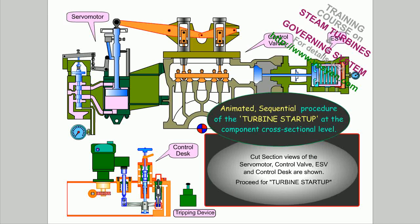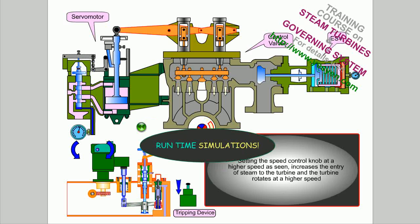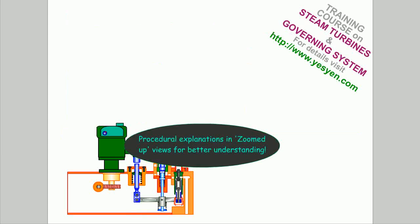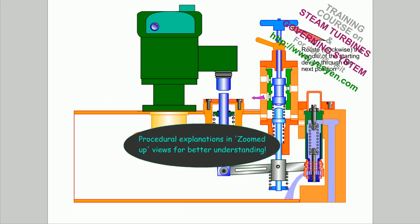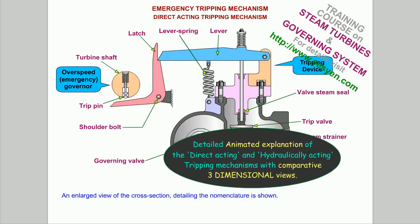An animated sequential procedure of the turbine startup at the component cross-sectional level is presented, along with runtime simulations and procedural explanations in zoomed-up views for better understanding. Detailed explanation of the lube oil and governing oil system with simulated interactivity and animated flow paths is provided. Detailed animated explanation of the direct acting and hydraulically acting tripping mechanisms is included, with comparative three-dimensional views.